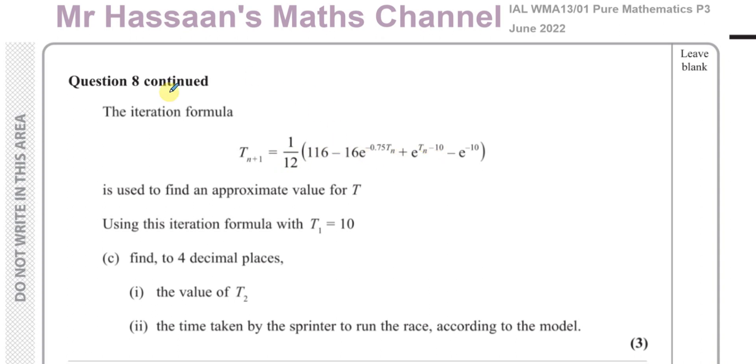So it says the iteration formula, which we found from integrating the expression for part B, is given by T_{n+1} equals 1/12 times (116 minus 16e^{-0.75T_n} plus e^{T_n - 10} minus e^{-10}).